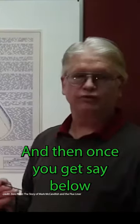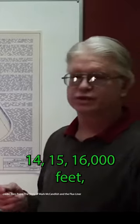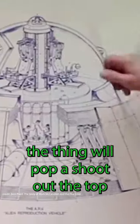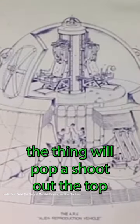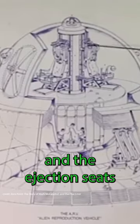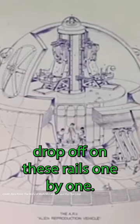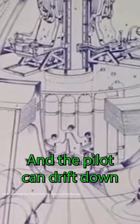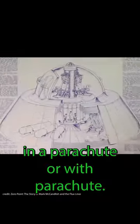And then once you get below 14, 15, 16,000 feet, the thing will pop a chute out the top and the ejection seats drop off on these rails one by one and the pilot can drift down with a parachute.